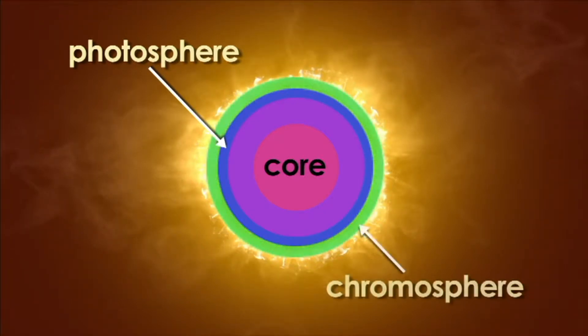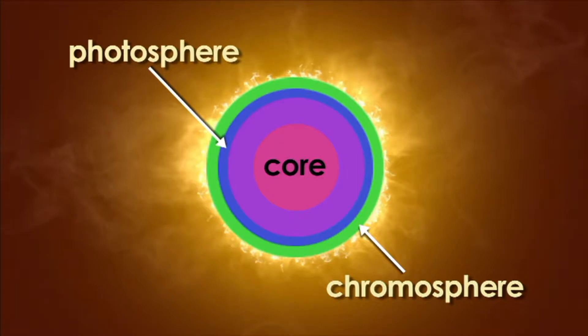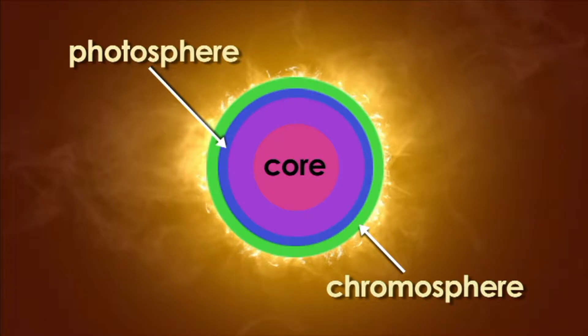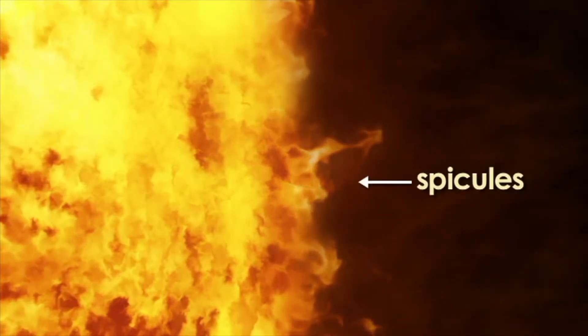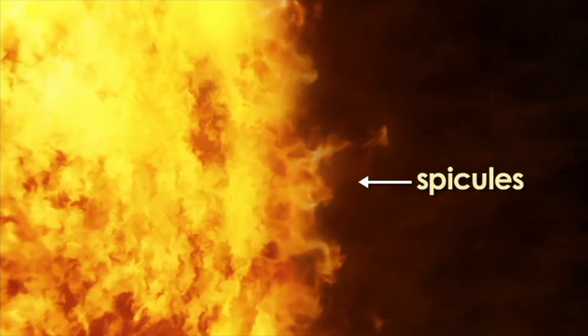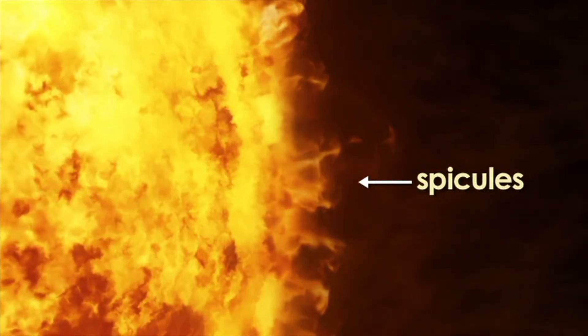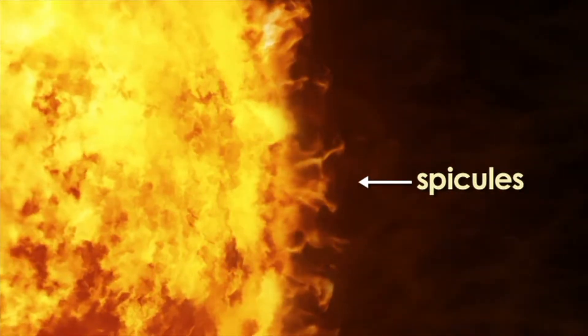Just above the bubbling photosphere is the chromosphere. The chromosphere is the layer of the sun's atmosphere above the photosphere. The chromosphere has spicules, or long thin lines of gas that resemble grass growing up from the photosphere. These blades of gas rise up to the chromosphere and drop back down every 10 minutes.